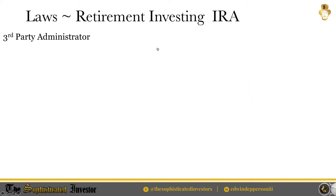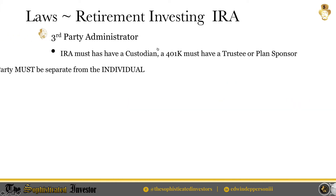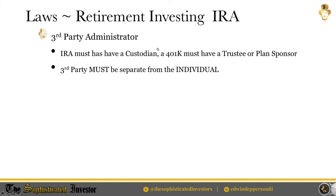One of the requirements is there must be a third-party administrator in place for an IRA or a 401k. For IRAs, these are typically called custodians. For 401ks, these are typically called a trustee or a plan sponsor. The third-party must be separate from the individual. The individual cannot actually be in charge or have the custodian or plan sponsor or trustee roles in the IRA or the 401k.